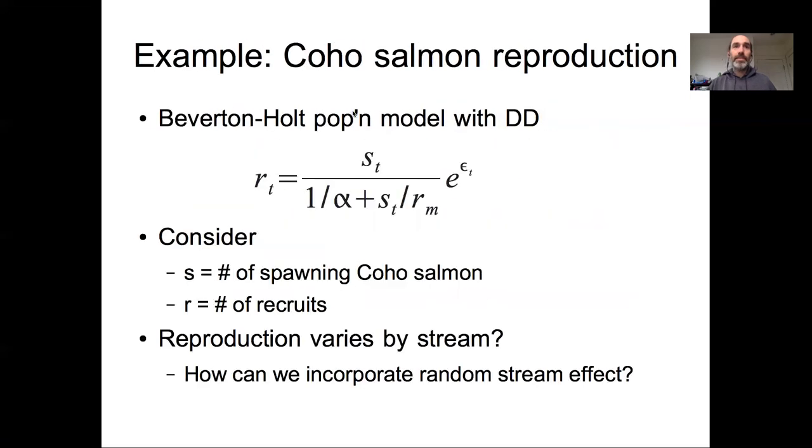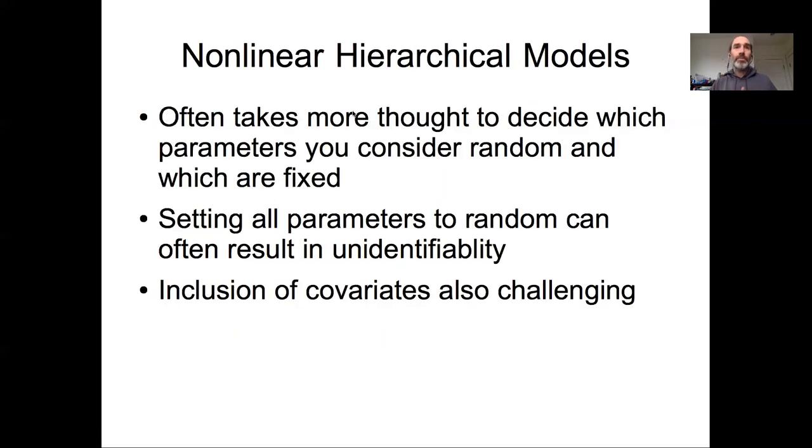Before I move on, I want to point out that some of these problems actually happen with linear models as well. Even if you're dealing with a linear model that might be a multiple regression model, if you have five or six, seven different X's, you might also have the same challenge of deciding which of those seven or eight different slopes you might consider to be random and which those slopes should be treated as fixed.